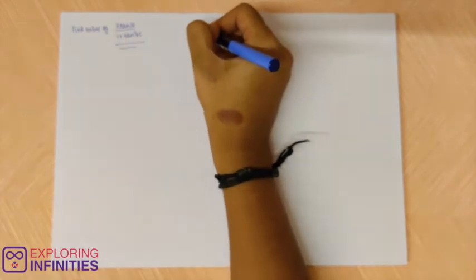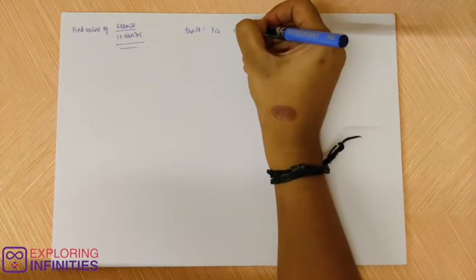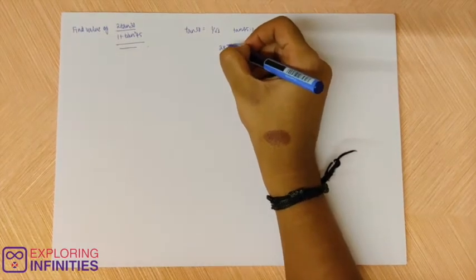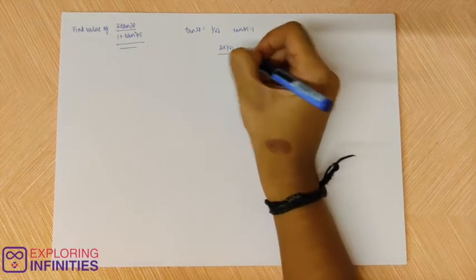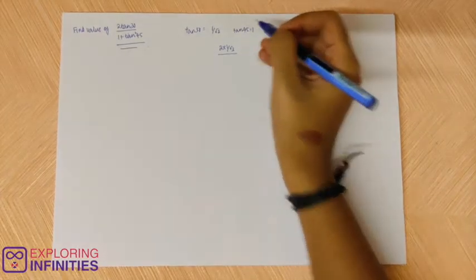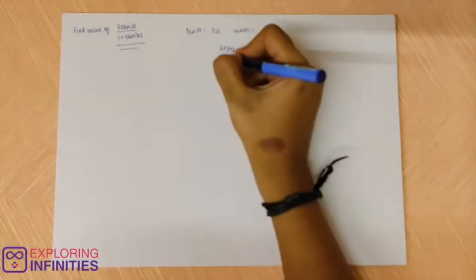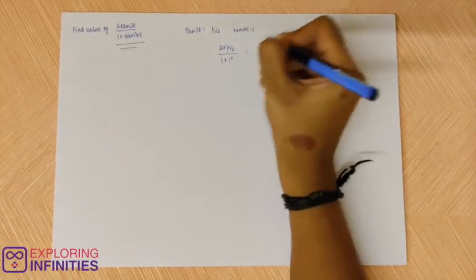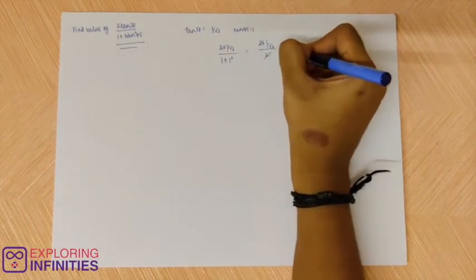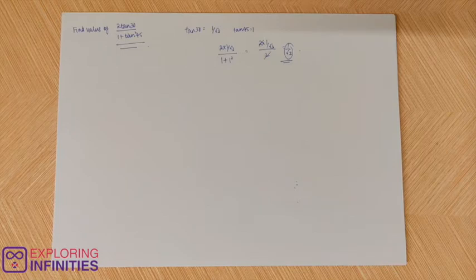So tan 30 is equal to 1 by root 3 and tan 45 is 1. So 2 tan 30 is 2 into 1 by root 3 by tan 45, tan 45 is 1, so that is 1 plus 1 square. 2 into 1 by root 3 by 2 so it is 1 by root 3. So that is how you solve any question that is given to you based on angles.